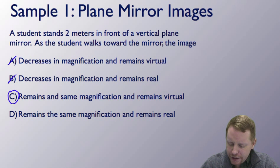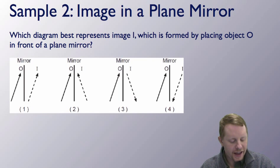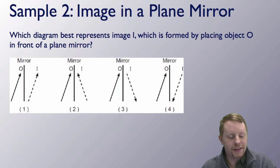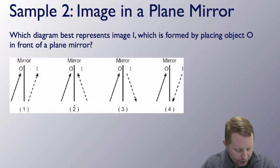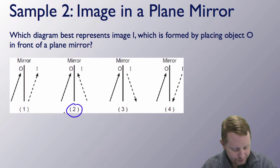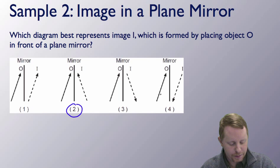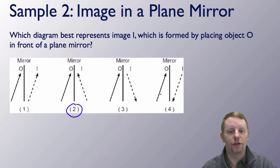Let's take a look at another example. Which diagram best represents image I, which is formed by placing object O in front of a plane mirror? We're going to have an exact reflection — so some choices don't work. Option two is looking pretty promising. Options three and four are not mirror images. So our best answer here must be two.